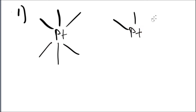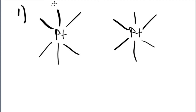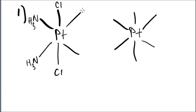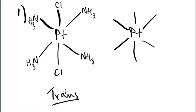You had to draw the geometric isomers of this octahedral compound. Octahedral means 6 ligands. This one is trans — the chlorine atoms are on opposite ends, not on the same side. So it is trans.